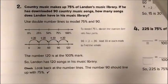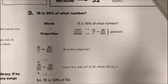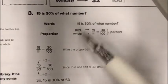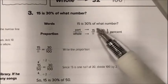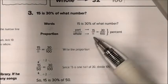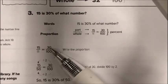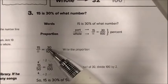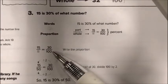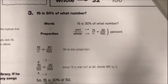For Example 3, I use the percent proportion. Fifteen is 30% of what number. Fifteen is my part, and 30% is written as 30 over 100. So: 15 over blank equals 30 over 100. I ask myself: 15 times what equals 30? Fifteen times two equals 30. Then: what times two equals 100? One hundred divided by two equals 50. So 15 is 30% of 50.